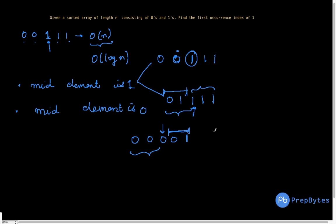If you're not clear with binary search, watch that video first and then come back. Now we have the approach: we find mid, which is start plus end divided by two. Start is always the starting index and end is the last index of the sub-array we're searching. Initially start is zero and end is n minus one, but they keep changing as we divide the array.